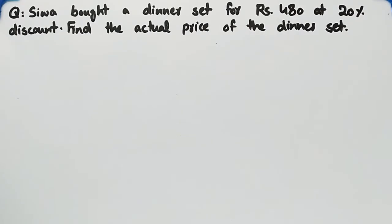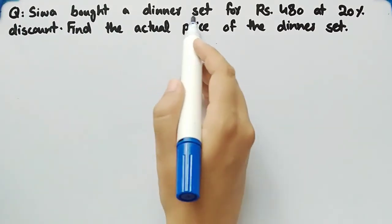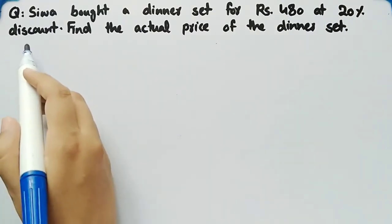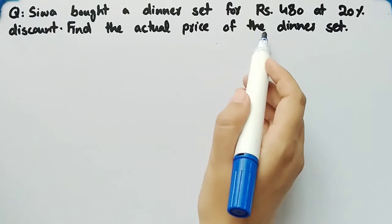In this video we will discuss a word problem related to discount and actual price. The problem states that Siva bought a dinner set for rupees 480 at 20% discount. Find the actual price of the dinner set.